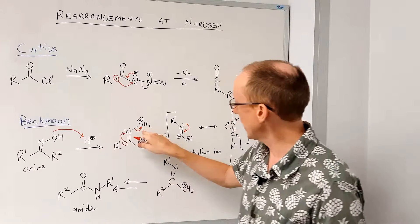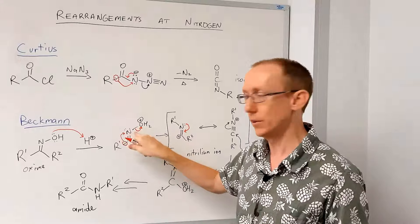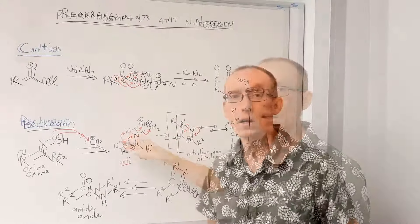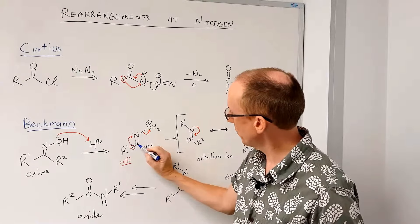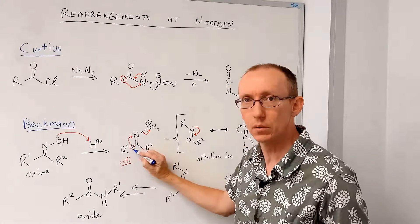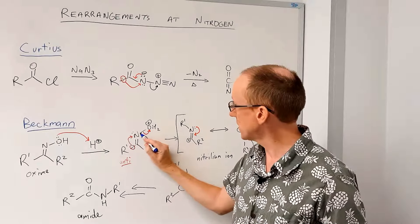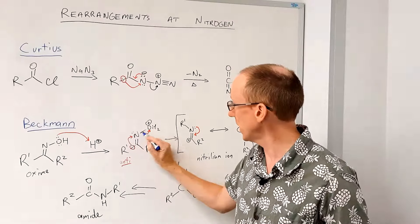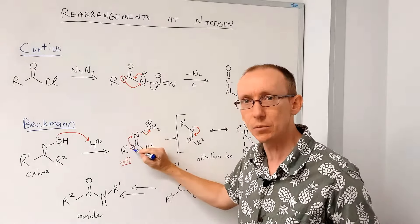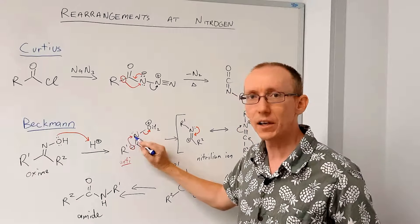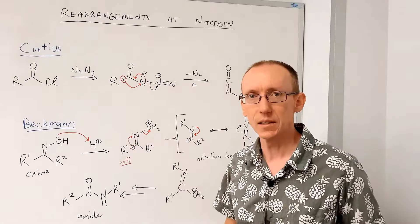When we protonate and make this species, it turns out that the R group that is opposite to the leaving group is the one that migrates. One way of explaining this is that we need overlap between the sigma orbital of the bond that is migrating with the sigma star orbital of the bond that is being broken. The NO bond has a sigma star orbital pointing out here that needs to overlap with that sigma orbital for this migration to take place in a concerted manner. You can look into this in more detail online.